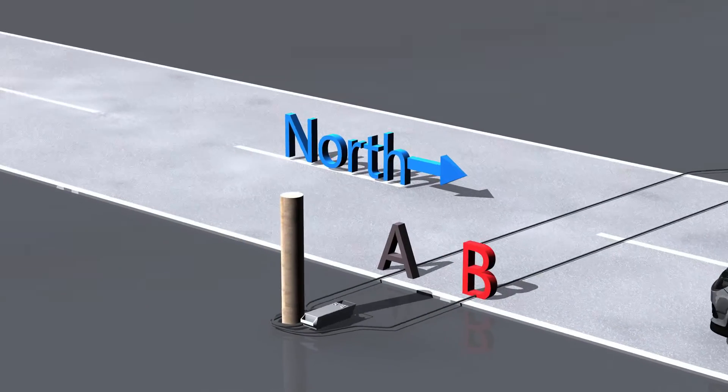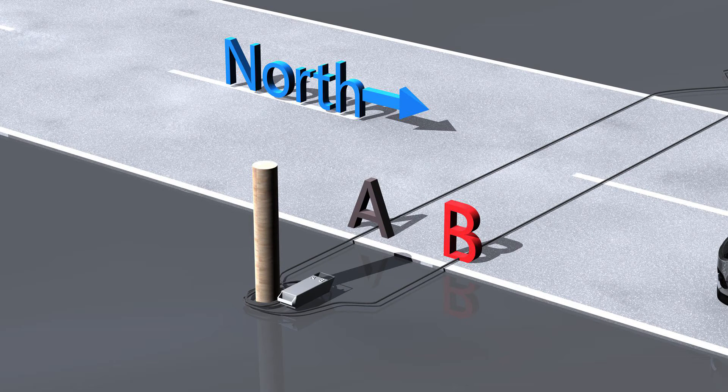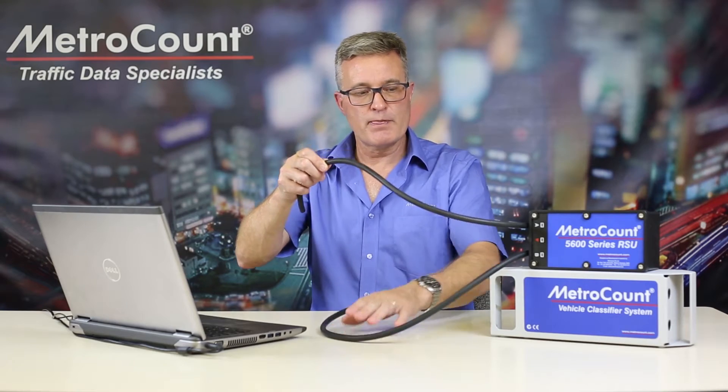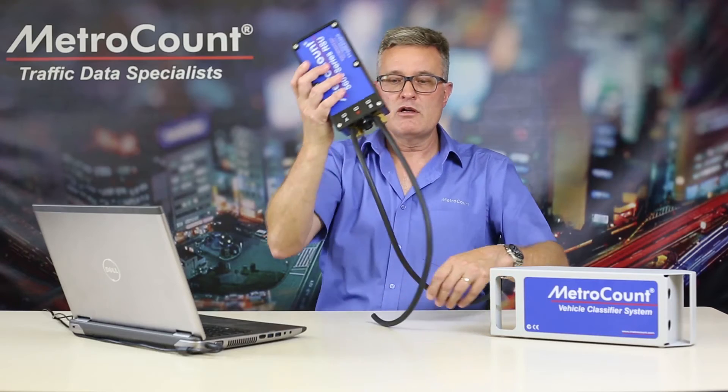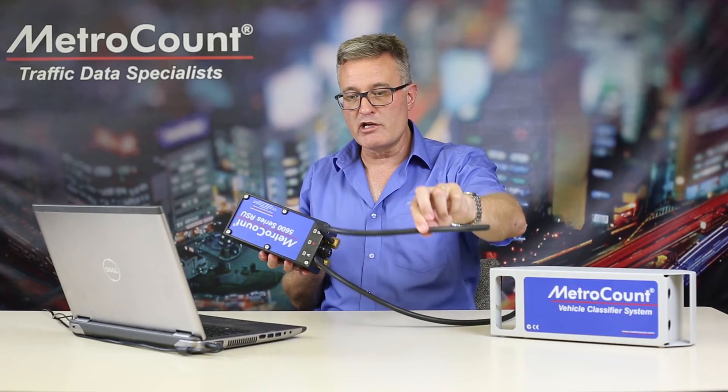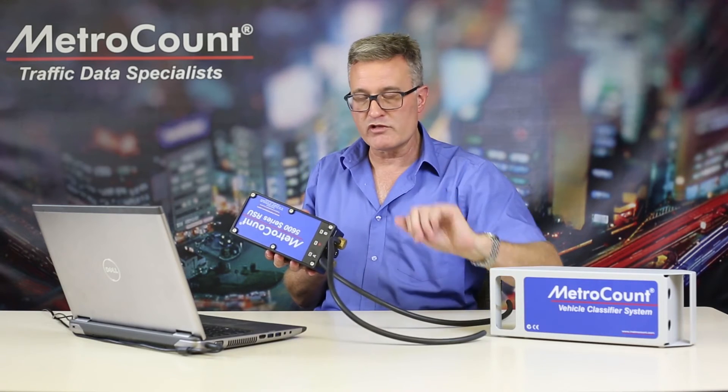So, A tube, B tube — northbound would be the A tube struck first, followed by the B tube. If our anchor point is unavailable and we simply move the logger to the other side of the road, we just keep those flow directions, so the A tube remains the first one struck in the northbound direction, followed by the B, and the inverse for southbound.